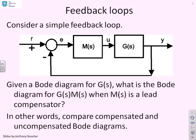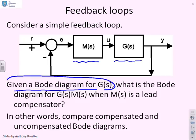As a final reminder, in the long term we're moving towards the analysis of feedback loops. Here's a simple feedback loop with a compensator m and a process g. The question we're asking is: if we had the Bode diagram for g without compensation, how would that be modified when the compensator is a lead? In other words, given g and a lead, what would the Bode diagram for gm become?